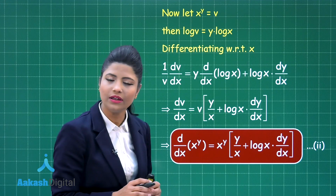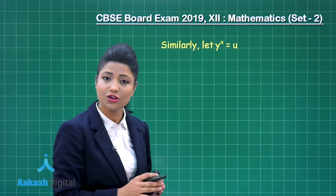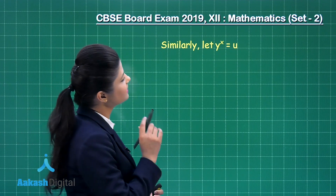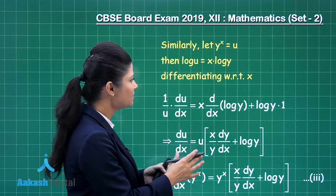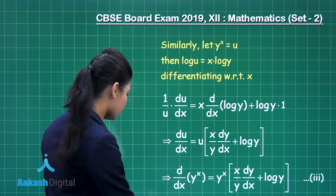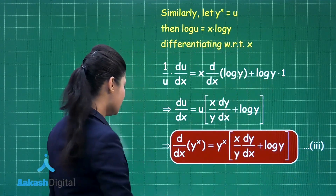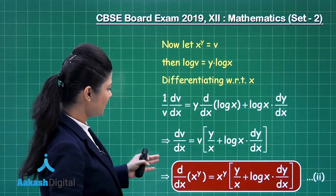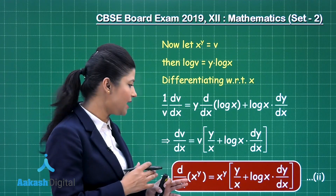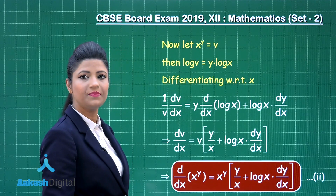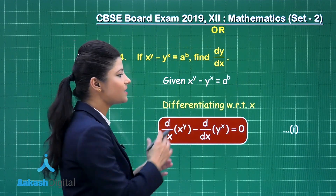In similar manner, to obtain the differentiation of y raised to the power x, let y raised to the power x equal to u. Taking log on both sides and differentiating both sides with respect to x in the same order gives equation number 3: the differentiation of y raised to the power x. In equation 2 we have differentiation of x^y as x^y into (y upon x plus log x times dy/dx). Now let us substitute equations 2 and 3 into equation 1.